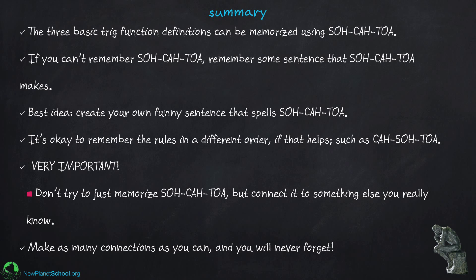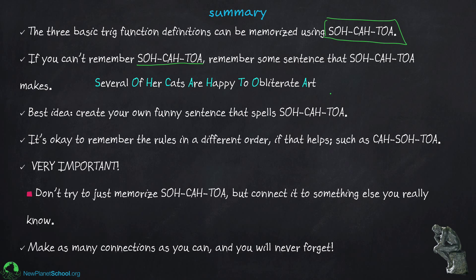In summary, the three trigonometric definitions can be memorized with the mnemonic SOHCAHTOA — don't ever forget that as long as you live. If you can't remember SOHCAHTOA, remember a sentence that spells it out, like "Several of her cats are happy to obliterate art." Come up with a crazy picture that goes with it so you won't forget. And keep in mind you can use different orderings — KASOTOA or anything you want — as long as the three-letter blocks stay together.